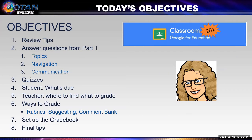So these are our objectives to cover those things. We'll review the tips, answer the questions from Part 1, looking at topics, navigation, communication. We're going to look at quizzes, where a student finds the assignments, where a teacher finds the assignments, grading including rubrics, suggesting, comment bank, and setting up the classroom grade book. When you have questions, ask them and I'll address them as we go.